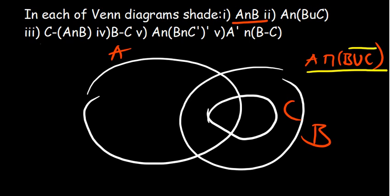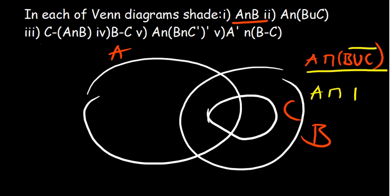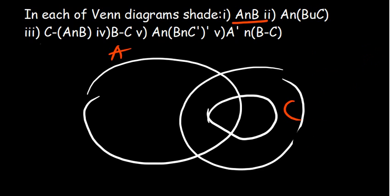Because C is a subset of B, B union C is the same as B itself — combining B with C just gives you B. So A intersection (B union C) reduces to A intersection B, which is the same shaded region we found before. The first and second questions have the same answer because C is a subset of B.